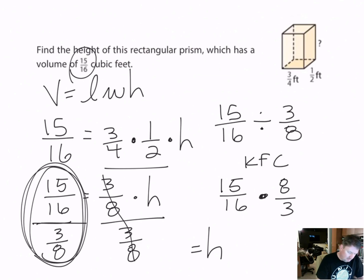Now we can multiply. First I'm going to simplify the 3 and the 15 - they're both divisible by 3. 3 divided by 3 is 1, 15 divided by 3 is 5. I can also simplify 16 and 8. 8 divided by 8 is 1, 16 divided by 8 is 2.